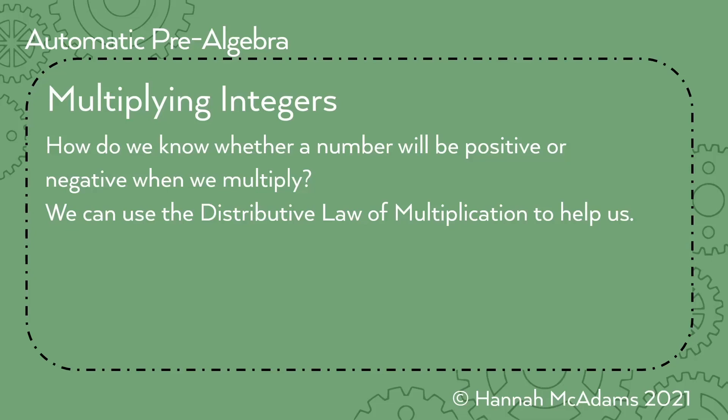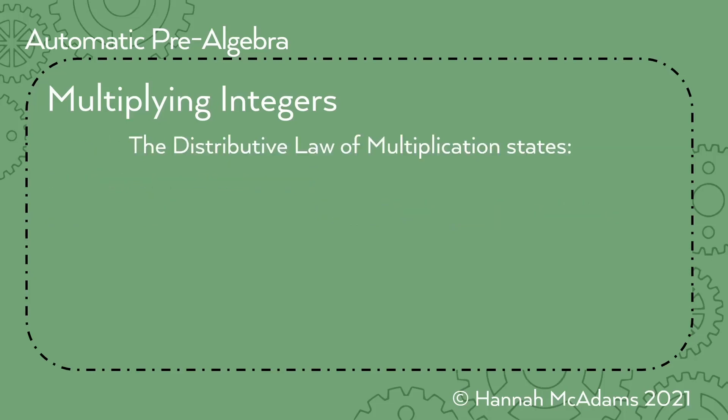We can use the distributive law of multiplication to help us prove this. The distributive law of multiplication states: A times parentheses B plus C equals AB plus AC. And AB means A times B, and AC means A times C. Also, if you put a number by a letter or a letter by a letter, it also means multiply.